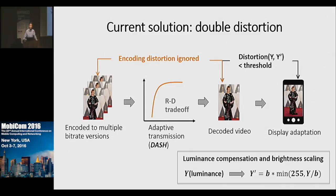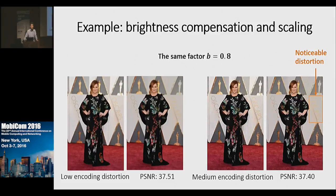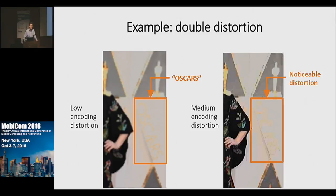Even though the display distortion computed by the algorithm locally is satisfied, the overall end-to-end distortion could be unacceptable. For example, we have two videos: one with low encoding distortion and another with medium encoding distortion. If we apply the same brightness scaling process using the same factor, the output distortion metric values are actually very similar. But if we zoom in to see the actual result, the one with medium encoding distortion has noticeable artifacts — specifically blurred text.